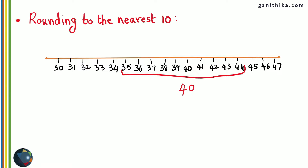All these numbers from 35 all the way to 44 will be rounded off to 40 when rounding to the nearest 10. So 35, 36, 37, 38, and 39 are on the left side of 40, and 41, 42, 43, 44 are on the right side of 40. This set of 10 numbers will be rounded off to the nearest 10 which is 40.